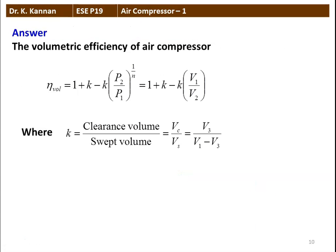The volumetric efficiency is defined as: η_vol = 1 + K − K·(P2/P1)^(1/N), or equivalently 1 + K − K·(V1/V2), where K is the clearance ratio, which is the clearance volume divided by stroke volume, V_C / V_S, or V3 / (V1 − V3).